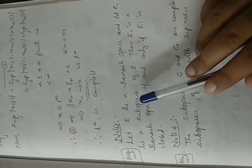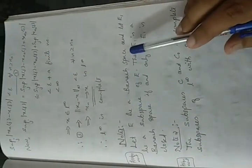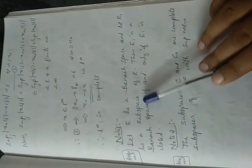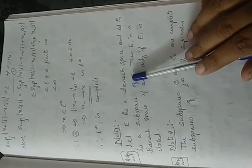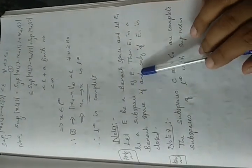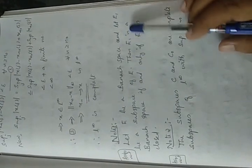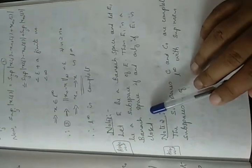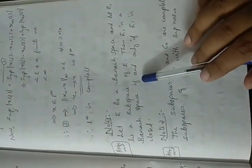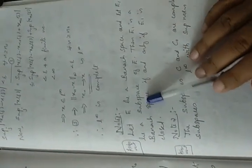Now we have a result: if E is a Banach space and E₁ is a subspace of E, then E₁ is a Banach space if and only if E₁ is closed. This result you have to do as an assignment.